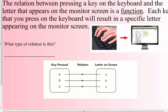The relation between pressing a key on a keyboard and the letter that appears on the monitor screen is a function. Each key that you press on the keyboard will result in a specific letter appearing on the monitor screen. What type of relation is this? One to one.